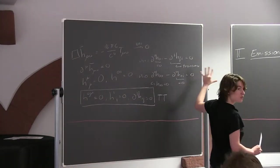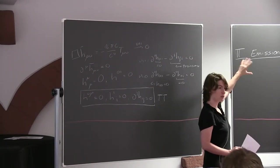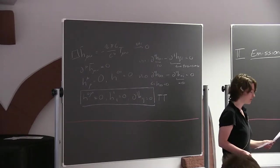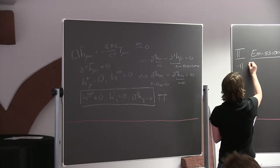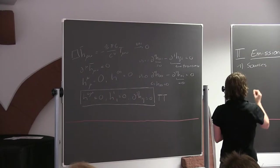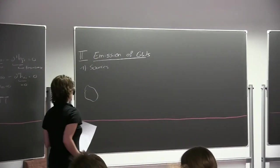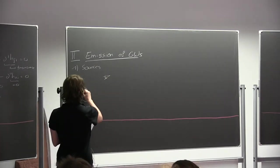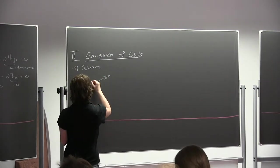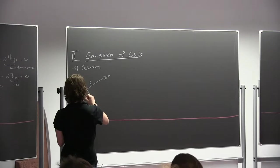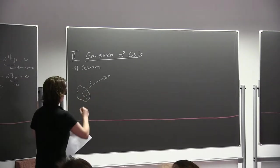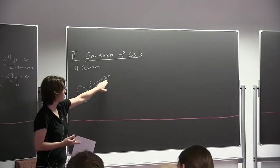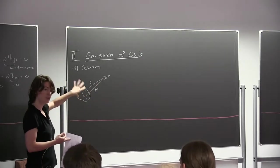Today, that was all about free propagation of gravitational waves. Now we need to talk about where gravitational waves actually come from — how we can actually emit gravitational waves, and what types of sources can emit them. Imagine you have some object and an observer who has built a gravitational wave detector. There's a distance x to the observer and y labeling positions within the source, with r being the distance to the observer.